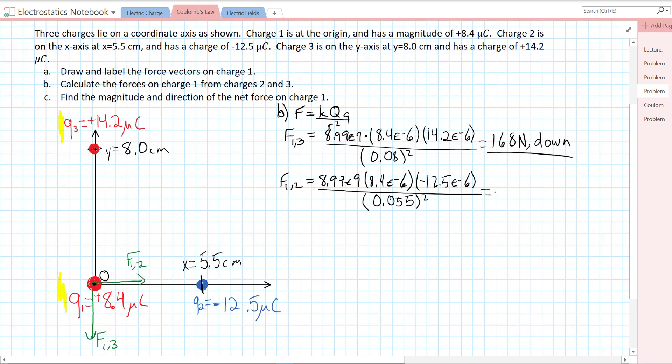We square that distance to get our answer. 8.99 E9 times 8.4 E minus 6, times negative 12.5 times 10 to the minus 6, divided by 0.055 squared. We get an answer of negative 312 Newtons. That negative sign just means attractive, so we can write the magnitude 312 Newtons. And the direction, which is to the right, or in the positive x direction. That's B.